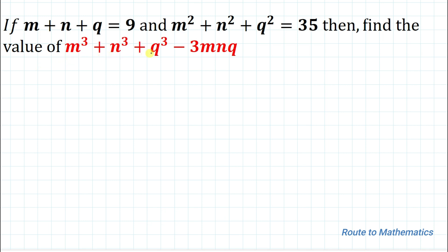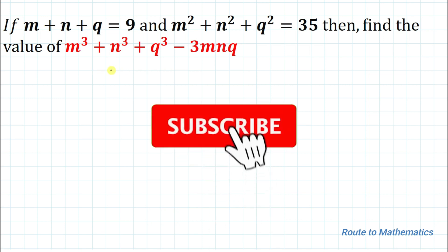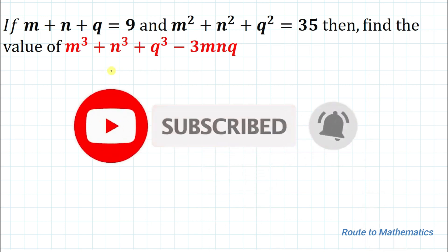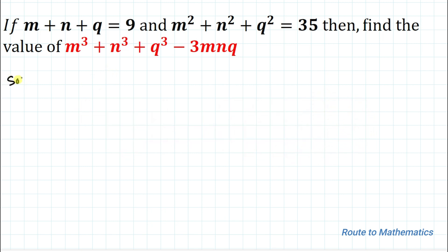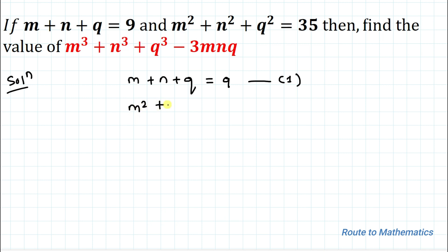Before going through the solution, please do subscribe to my channel and hit the like button for more such interesting videos. So let's start the solution. Our first equation is M plus N plus Q equals 9, and our second equation is M squared plus N squared plus Q squared equals 35.